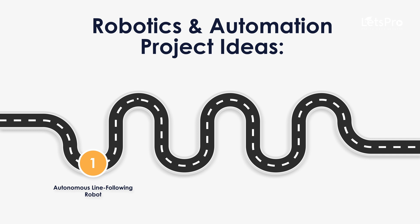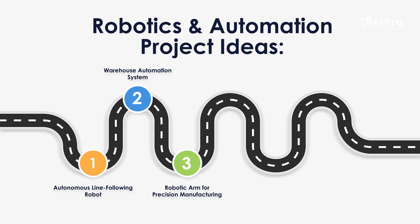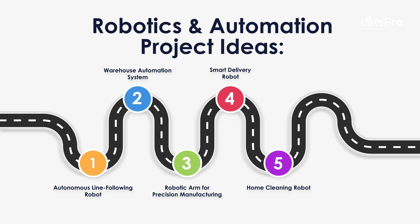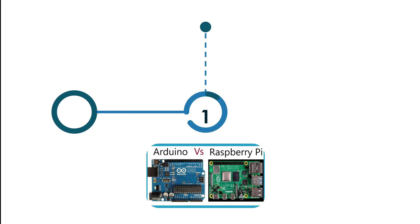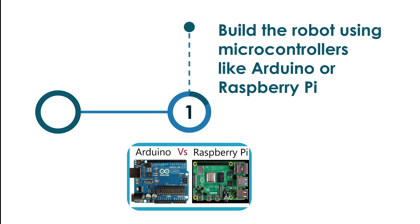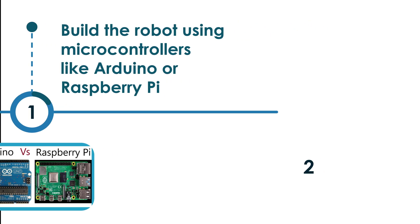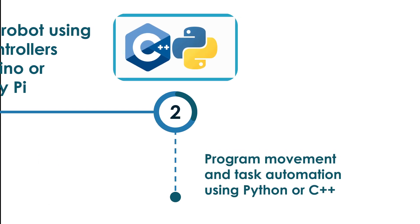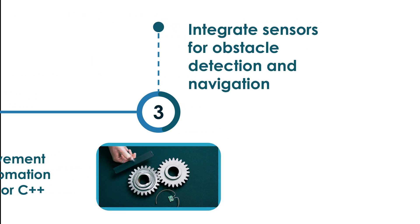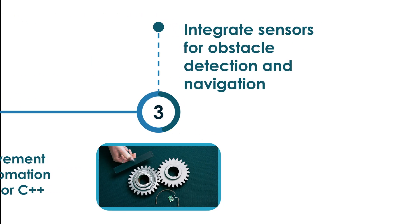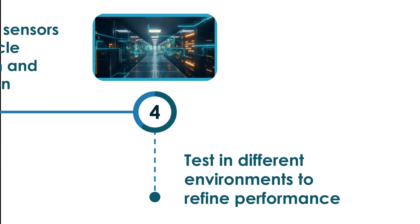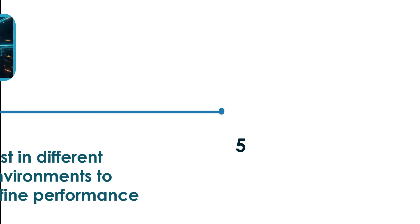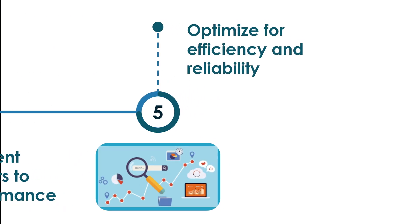For prototype development: build the robot using microcontrollers like Arduino or Raspberry Pi, program movement and task automation using Python or C++, integrate sensors for obstacle detection and navigation, test in different environments to refine performance, and optimize for efficiency and reliability.